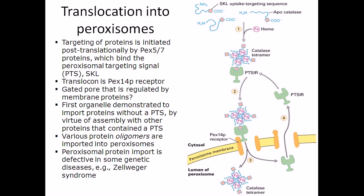Once the proteins are made, the key difference is that peroxisomes also require a specific signal sequence telling the protein to be inserted into the peroxisome and not any other organelle. That sequence is called the peroxisomal targeting signal, or PTS1. Another protein called PTS1R acts as the receptor for that signal sequence, binding to PTS1 and helping the protein be inserted into the peroxisome.